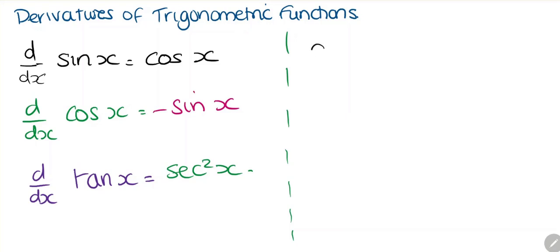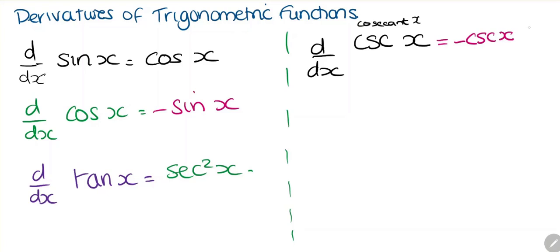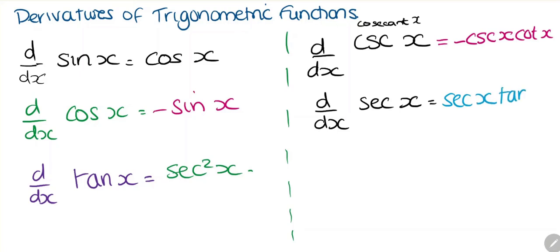Now the reciprocal functions. d/dx: if we look at the reciprocal of sine, which is cosecant — cosecant of x — this is going to be negative cosecant of x multiplied by cotangent of x. And if we take d/dx of secant of x, this is going to be secant of x multiplied by tan of x.